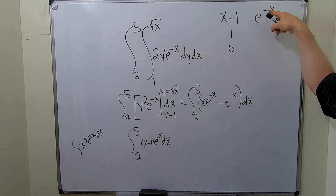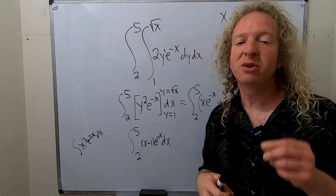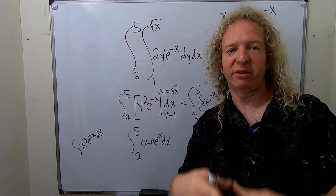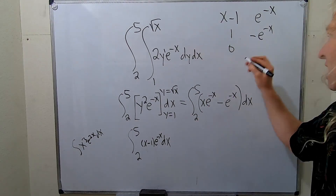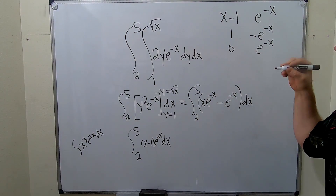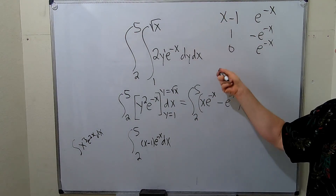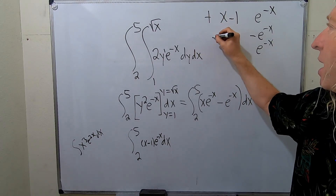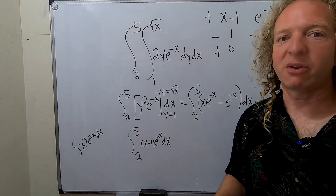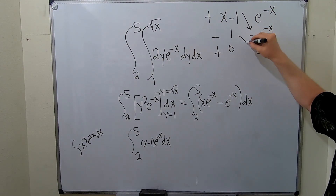This piece hangs out because it's a constant — when you integrate with respect to y, all the other variables are constants. We use a double bracket from 1 to the square root of x. I personally like to write y equals 1 and y equals square root of x, so I don't mess up. And then we still have the dx.